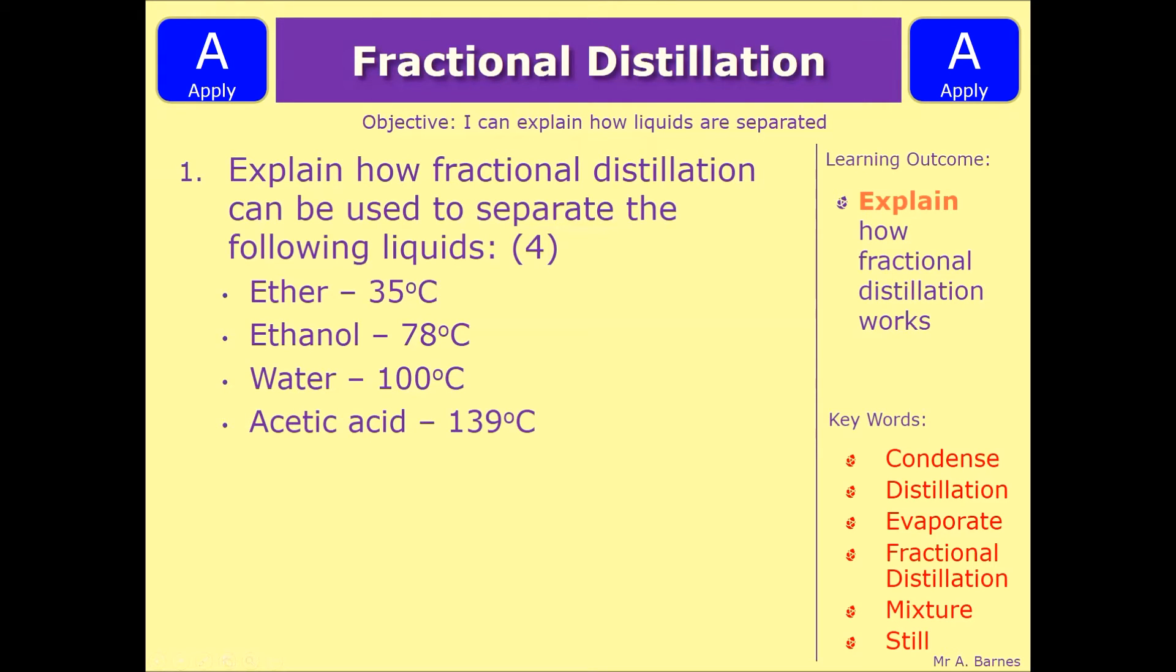Okay let's have a look at an example question then. So we're going to focus on fractional distillation for this bit and the question is explain how fractional distillation can be used to separate the following liquids. So we have ether at 35 degrees, ethanol which has a boiling point of 78 degrees, water at 100 and acetic acid at 139. So have a think to yourself and have a go at answering the question, pause the video now.